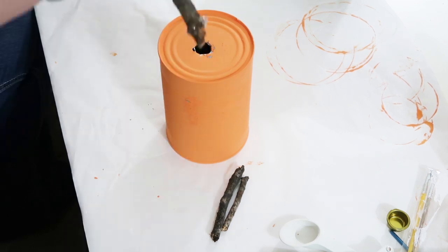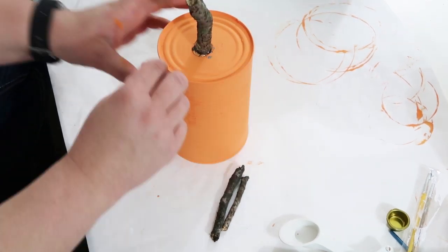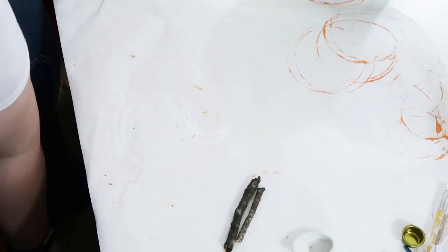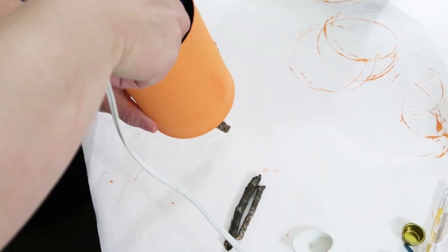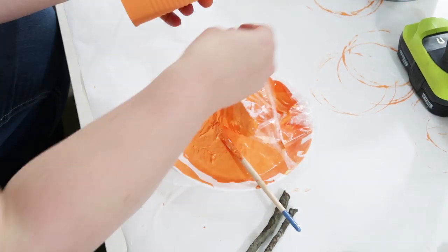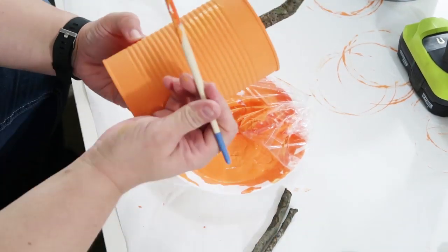Now to make sure it gets a really good fit in there I put some hot glue on it first and then shoved it down into that hole and then on the inside of the can I dripped hot glue down in there around that stick to really seal both sides of it so it won't pop out over time.